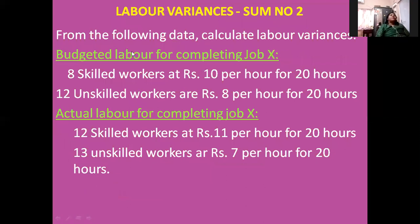Let me work out one more problem: from the following data, calculate labor variances. Budgeted labor for completing job X — budgeted here represents the standard. There are 8 skilled workers at rupees 10 per hour for 20 hours, and 12 unskilled workers at rupees 8 per hour for 20 hours. As per actual, we have the same categories — skilled and unskilled — with their actual number of workers, rate per hour, and hours worked.